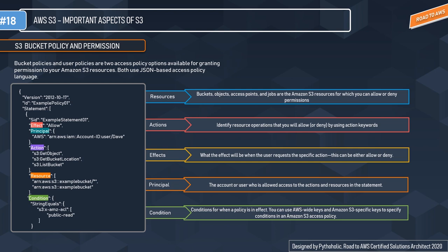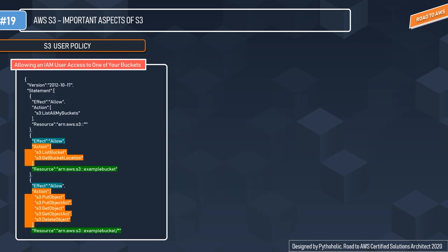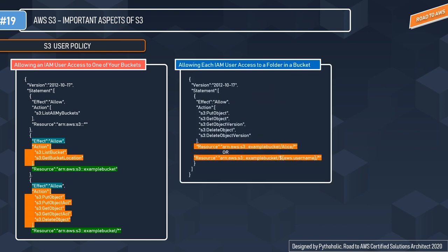You can use predefined AWS-wide keys and S3-specific keys to specify conditions in an S3 access policy. For example, a condition that requires the user to include the x-amz-acl header with a value of public-read in every PutObject request. For user access policies, the first example is allowing an IAM user access to one of your buckets — we allow three operations: s3:PutObject, s3:GetObject, and s3:DeleteObject, plus s3:ListBucket and s3:GetBucketLocation required for the console.